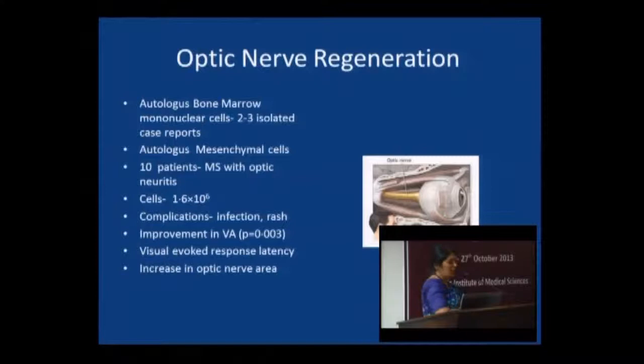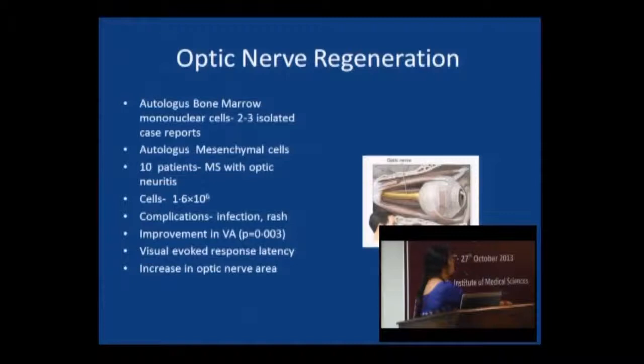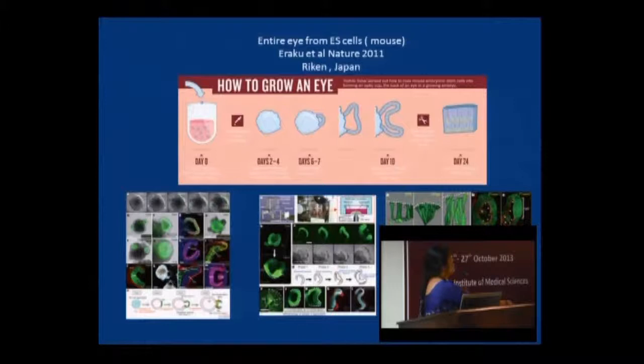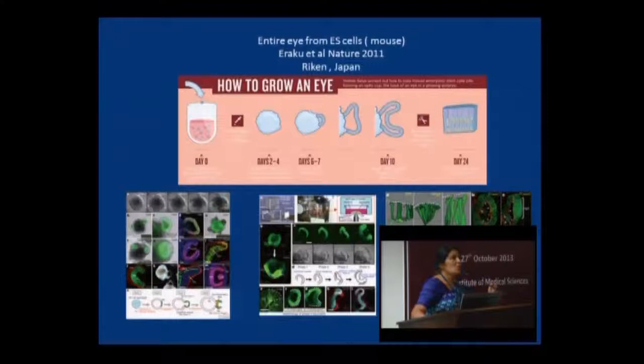For optic nerve degeneration, there are isolated case reports using autologous bone marrow in optic neuritis — especially in multiple sclerosis — and autologous mesenchymal cells have also been injected, but these are only case reports, not large series. And fascinatingly, the entire eye has been regenerated using embryonic stem cells — remarkable bench progress, though not yet in clinical application.